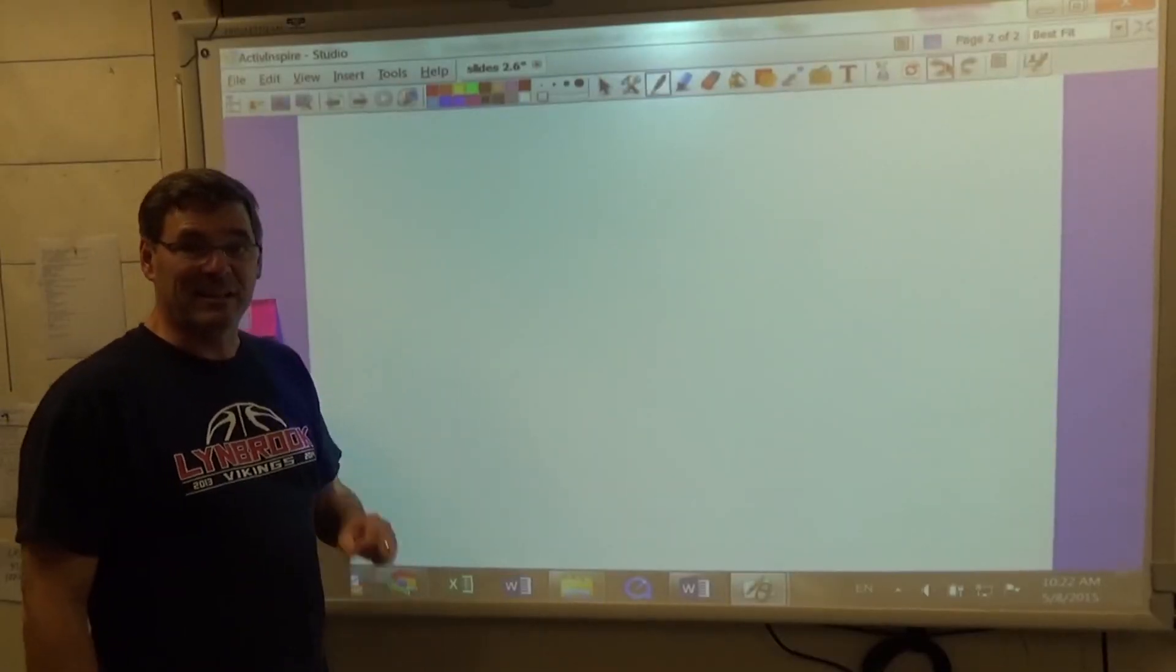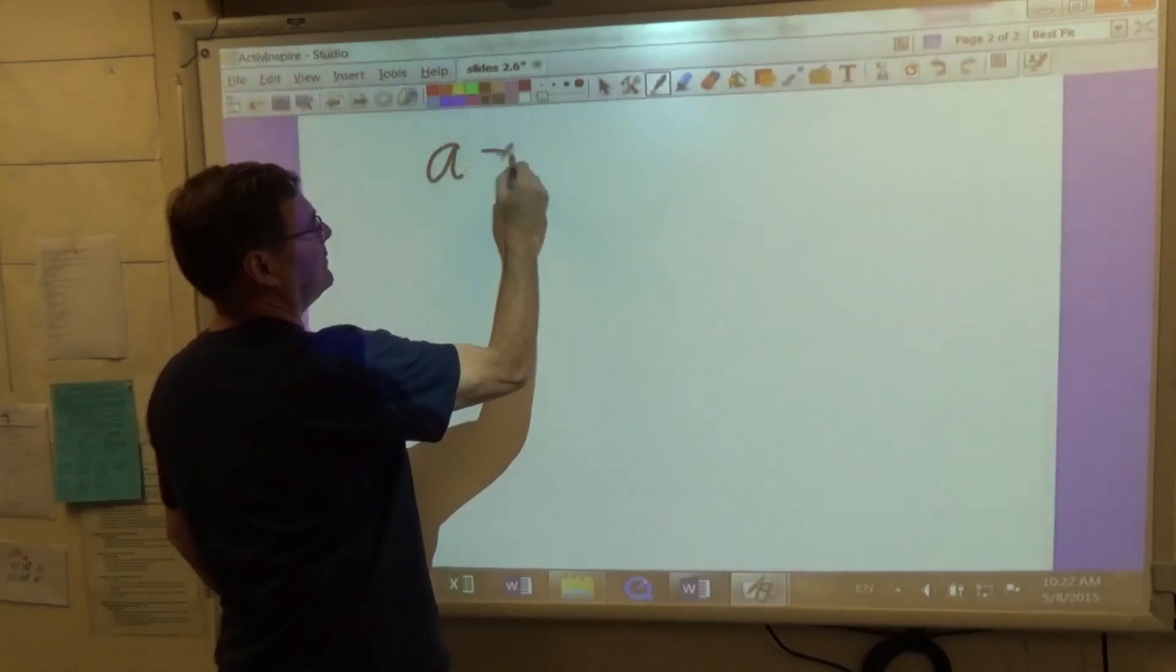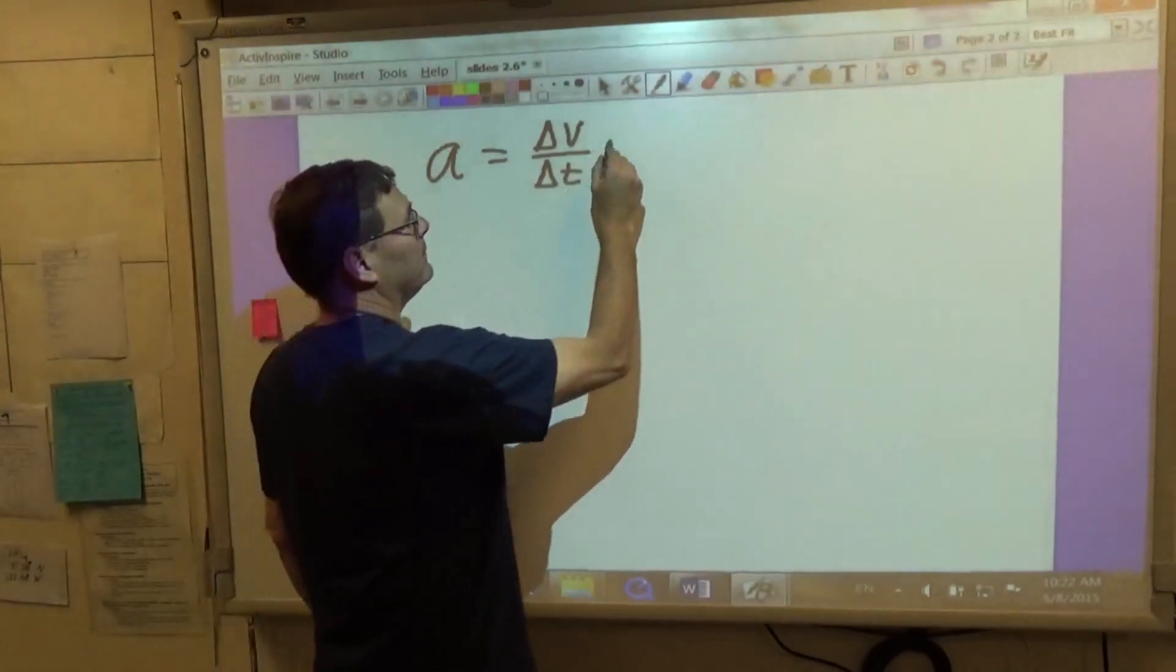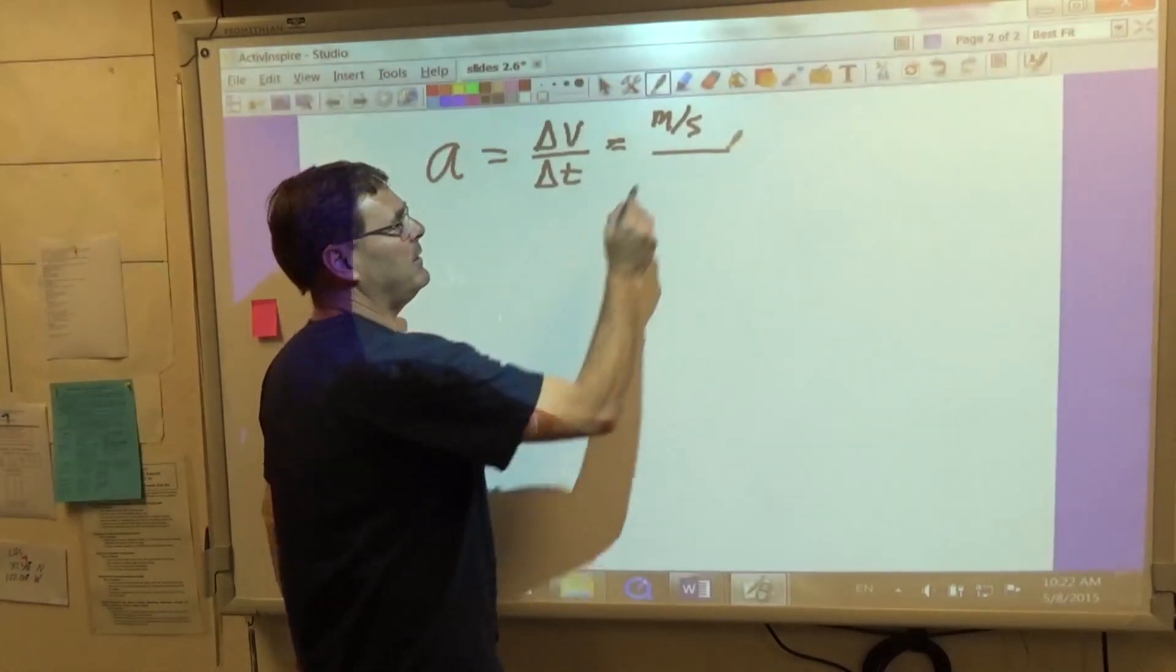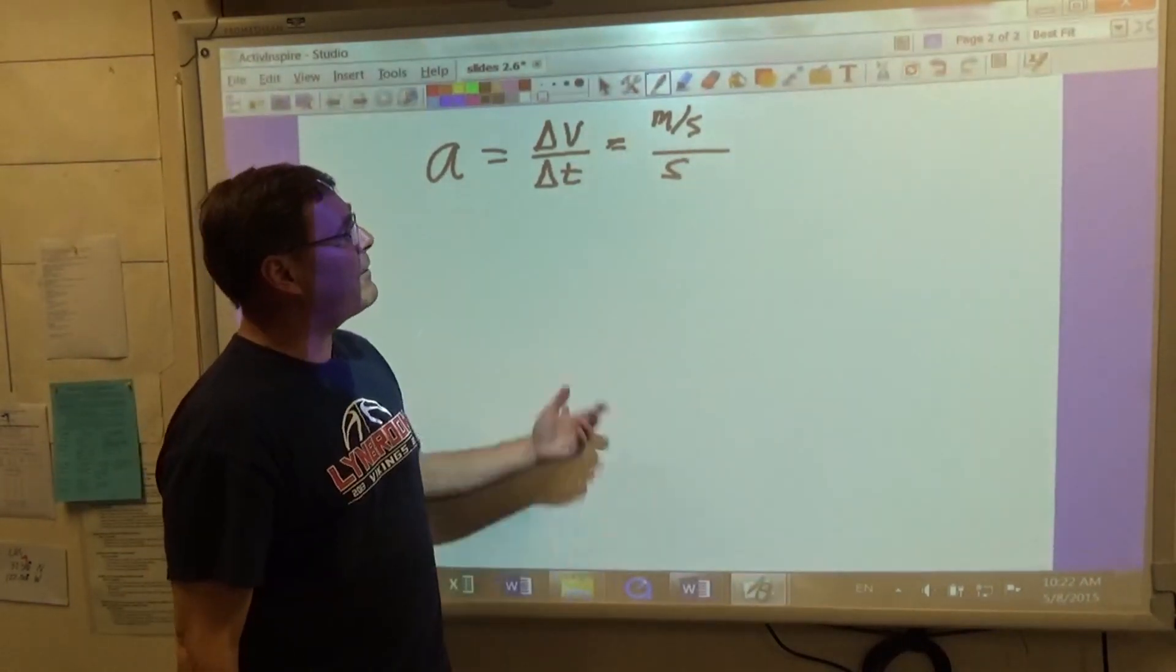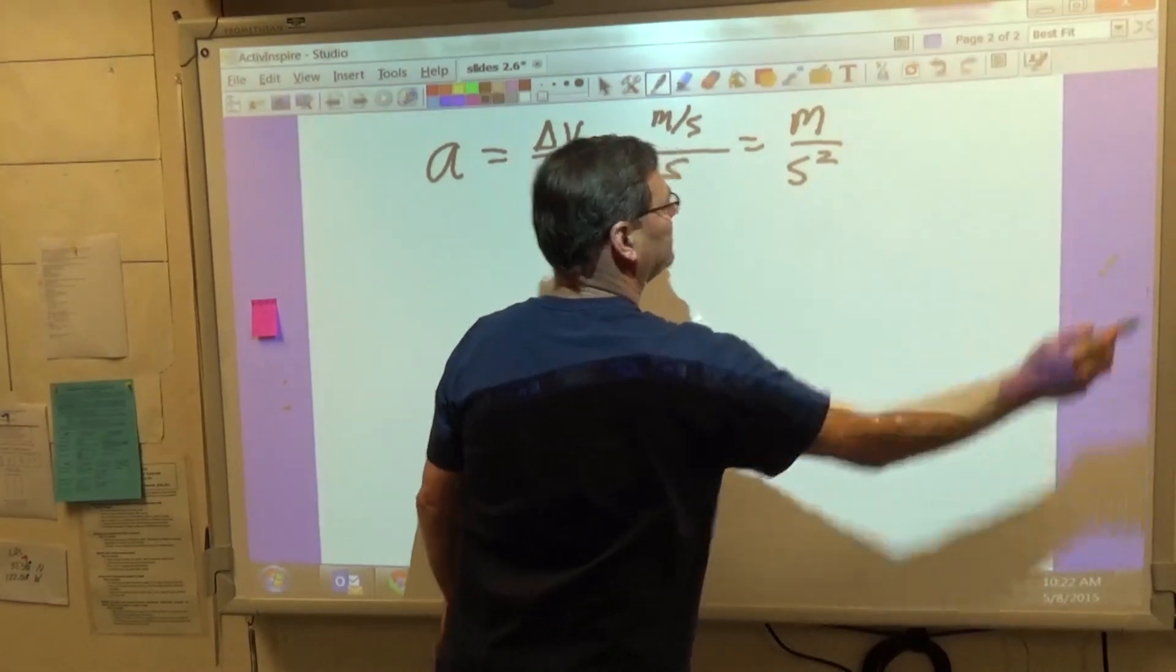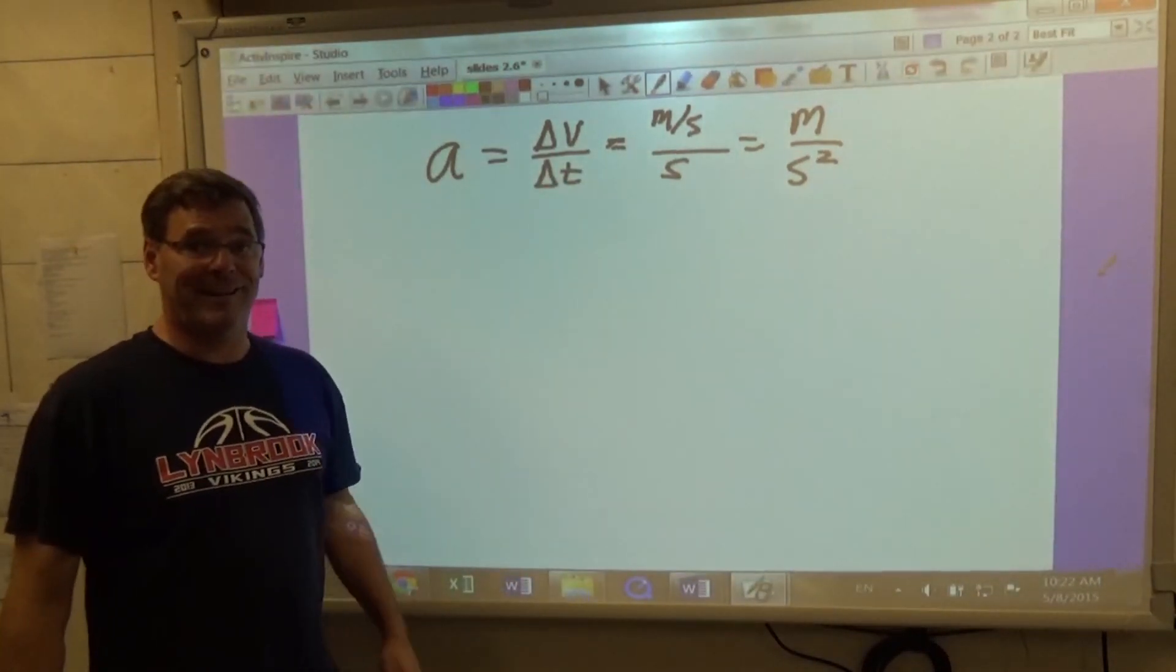Let's talk a little bit about the units of acceleration. So we know that acceleration is equal to change in velocity over change in time. So if we look at the units of velocity, that's meters per second, and the units of time is seconds. So just like you would simplify a fraction in math class, this would become meters per second squared. So that is one unit of acceleration.